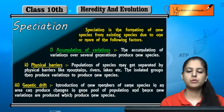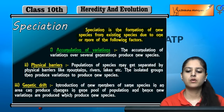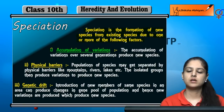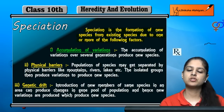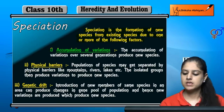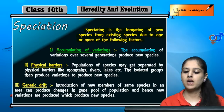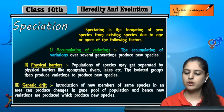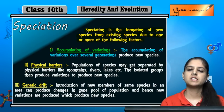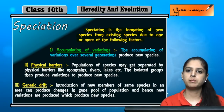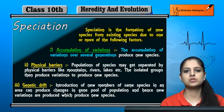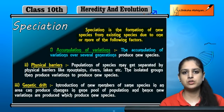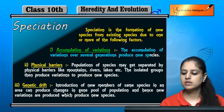The first factor is accumulation of variations. We learned that characters pass from parents to child, and ultimately the child is a little different from their parents. When these variations are accumulated over several generations, the variation becomes permanent and due to this, new species are produced.